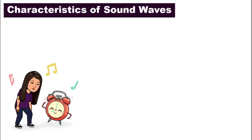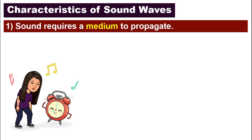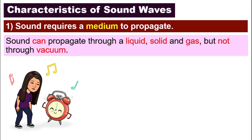The first characteristic of sound waves that we are going to look at is: sound requires a medium to propagate. What is the meaning of propagate? Propagate is the way sound moves. So for sound to move, for sound to travel, it needs a medium. That means sound can propagate through liquid, solid, or gas, but it cannot travel through vacuum.